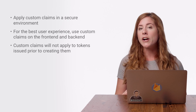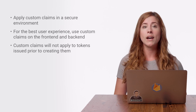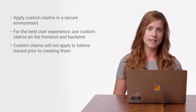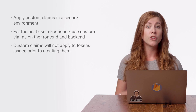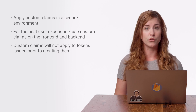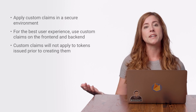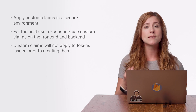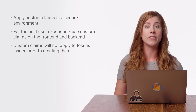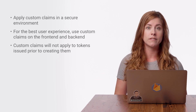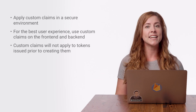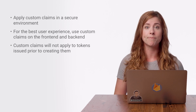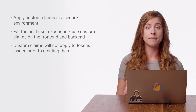If a user has logged in and then you add a custom claim, they won't have it on their token until the next time the token is issued. The reverse is also true — if you take away access by removing a custom claim, access will not be immediately revoked on existing tokens. Each client SDK has a method to refresh the Firebase token, so you can use this where appropriate.